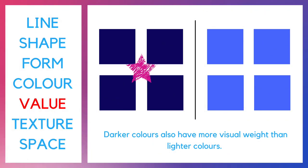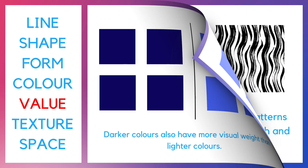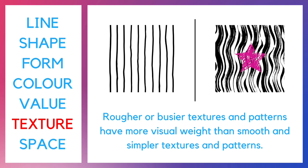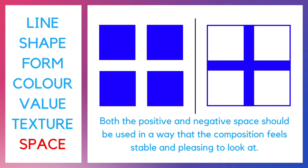Warmer colors advance into the foreground and appear heavier than cool colors, which recede into the background. Darker colors also have more visual weight than lighter colors. Rougher or busier textures and patterns have more visual weight than smooth and simpler textures and patterns. To achieve balance, you must use both positive and negative space so that the composition feels stable and pleasing to look at.